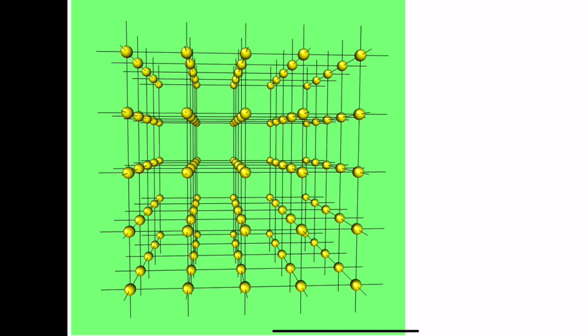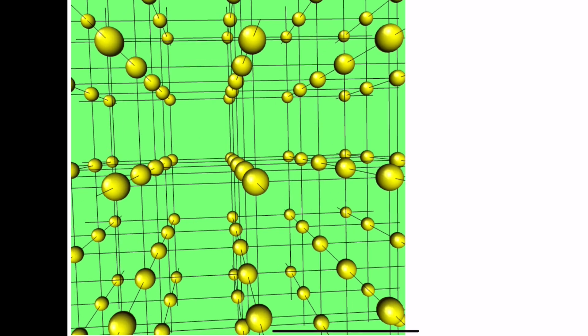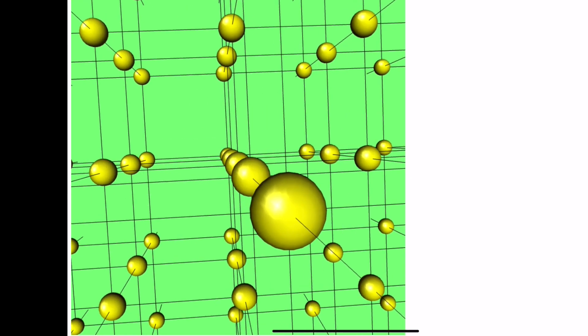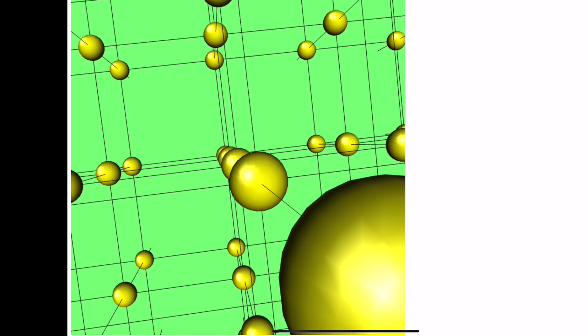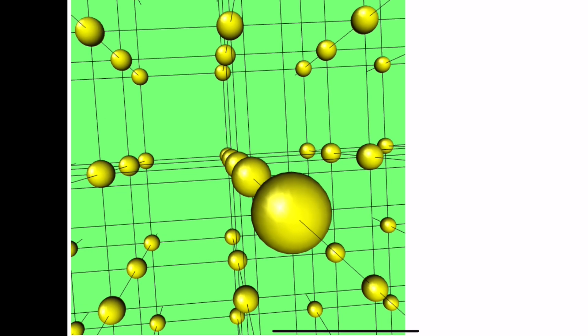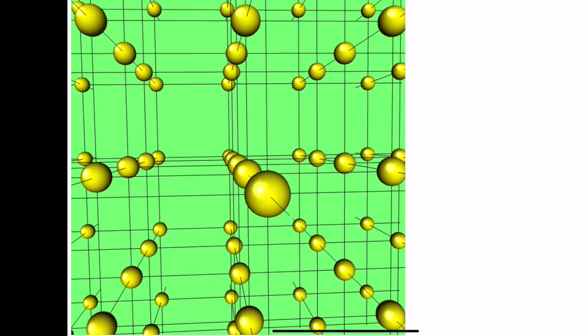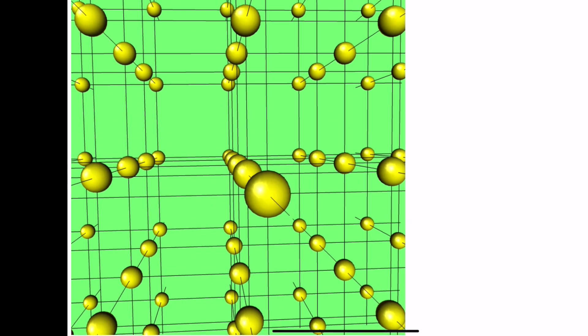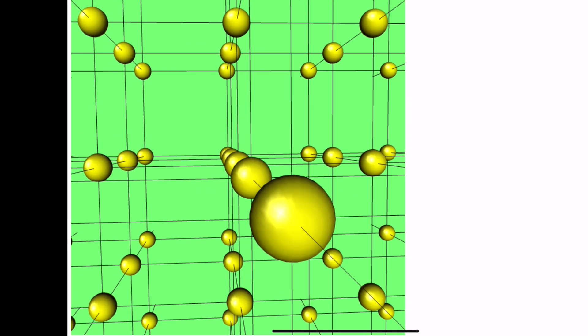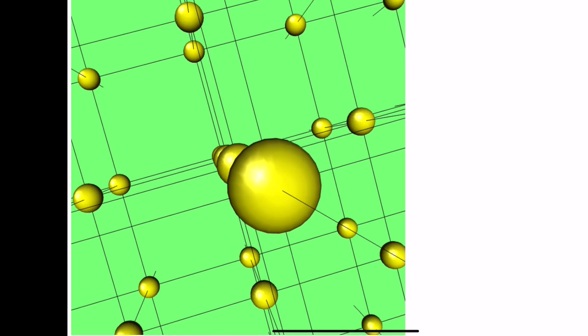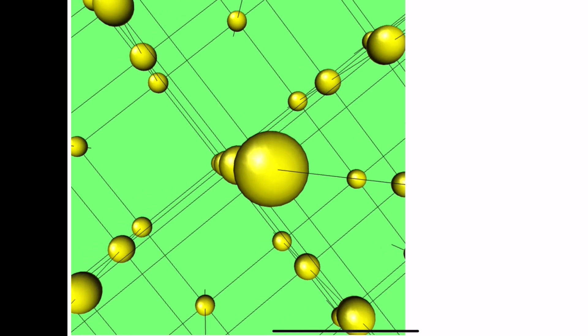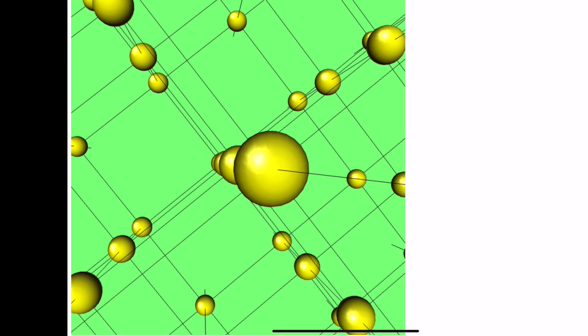If we were to add on additional unit cells into a larger array of these simple cubic structures, this is what things actually look like. When solids form in the simple cubic crystal class, they end up forming effectively infinite arrays of these unit cells, which is why it's easier to think about them in terms of a single unit cell — they're just repeating patterns of the same thing.